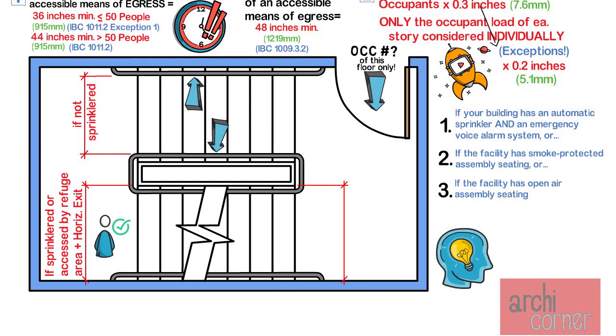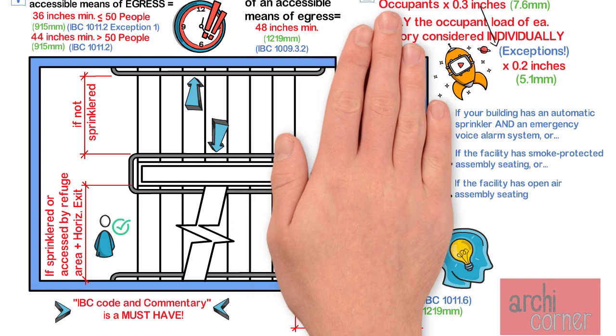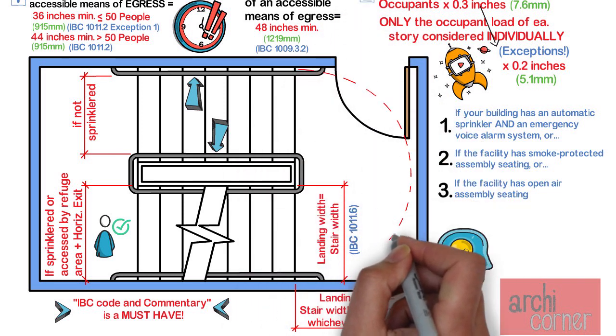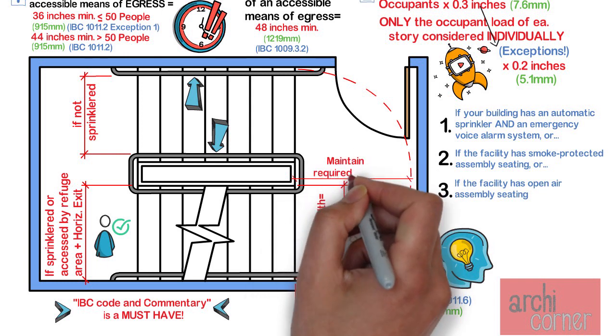The width of the landing is simple. It must be as wide as the stairs themselves. That's easy. And the length of the landing is also simple. The length must be the same as the stair width or 48 inches, whichever is greater. Something very interesting here is that if you read the IBC commentary, it notes that this section is not intended to have square landings. Instead, it is intended to have a path of travel that continues the minimum width of your stairway. Therefore, in theory, you may have curved landings.